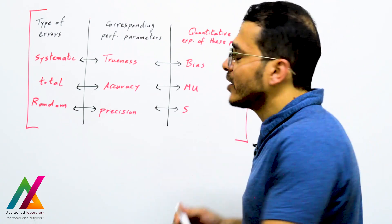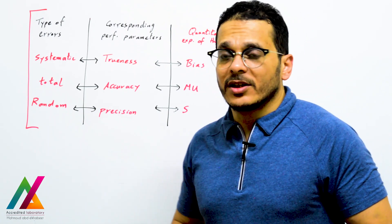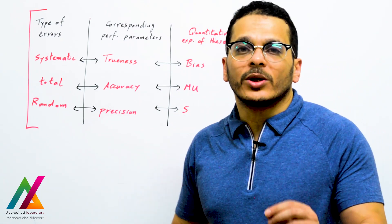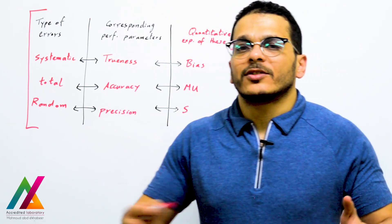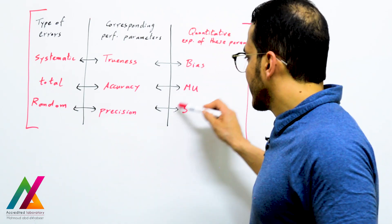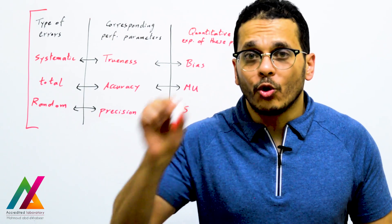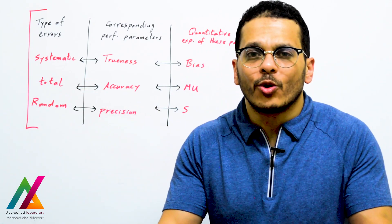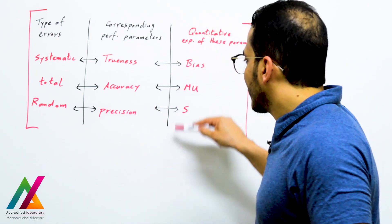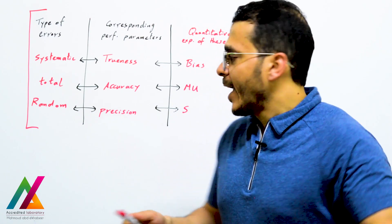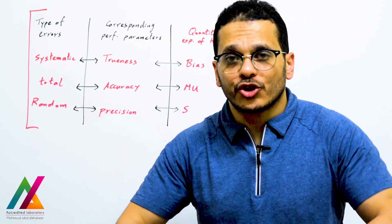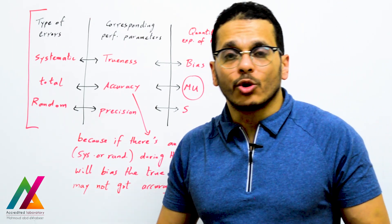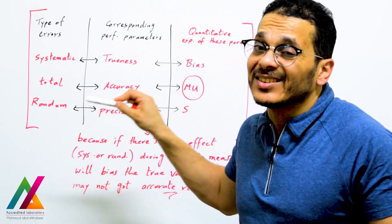Precision is the estimate of random errors and can be expressed as standard deviation, calculated from repeatability and reproducibility. To evaluate precision, you perform replicate analyses over a long time scale for reproducibility and calculate the standard deviation. If the standard deviation is low, your results are close to the true value and random errors are low. If the standard deviation is high, random errors are significant. Accuracy is the estimate of total systematic and random errors and can be expressed as measurement uncertainty.